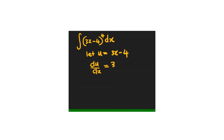The aim is also to make dx the subject of the formula. So dx will be equals to du divided by 3 — I've cross-multiplied and made dx the subject. Now I make my substitution.